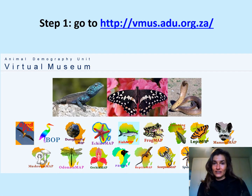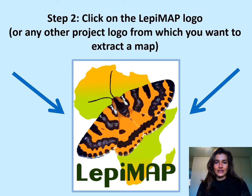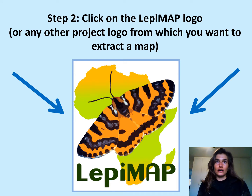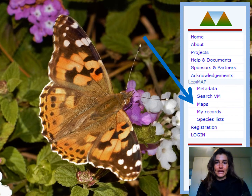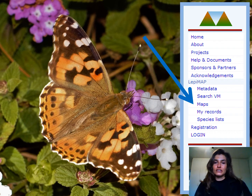Step one: go to the virtual museum website, the URL is displayed on the screen. Then you click on the logo of the project for which you are wanting a species map. For today's example we're going to be going into LepiMap, so you click on the LepiMap logo. Then on the left hand side of your screen you'll see a bunch of tabs and there you'll see one that says maps.